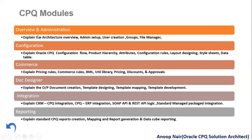First, I will cover the overview and administration. This will explain the Oracle CPQ architecture — how the backend works, how this product has been developed — along with all the architecture and techniques used. It also covers basic setup: setting up a system, user creation, groups, file manager, and all those kinds of information. This is a plain vanilla kind of training session that will give much more value when a new system is introduced to a resource or developer, showing how the basic things have to be done in an environment.